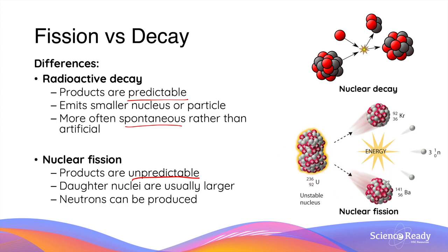Even though the diagram shows the production of krypton and barium as the daughter nuclei of nuclear fission of uranium, there could be other combinations of nuclei being formed from the fission of uranium-236. No matter what the products are, they need to obey the conservation of mass and energy. So as long as the number of neutrons and protons before and after the reaction remain conserved, then any combination of daughter nuclei could possibly be formed. So unlike decay, it is very difficult to predict exactly what type of daughter nuclei will be produced. Furthermore, in nuclear fission, the size of the nuclei produced are usually much larger than in decay, and in addition to the daughter nuclei, neutrons can also be produced.